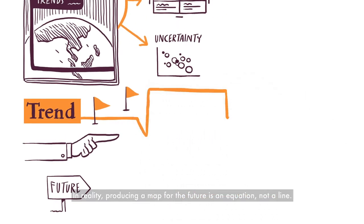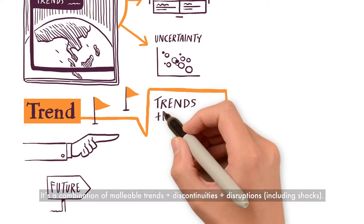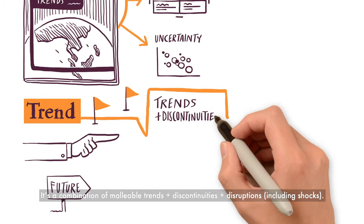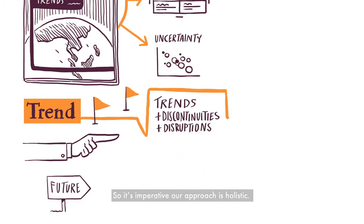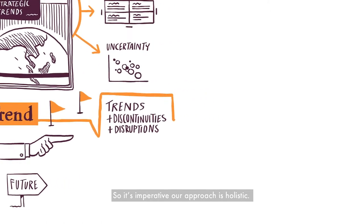producing a map for the future is an equation, not a line. It's a combination of malleable trends and discontinuities and disruptions, including shocks. So it's imperative our approach is holistic.